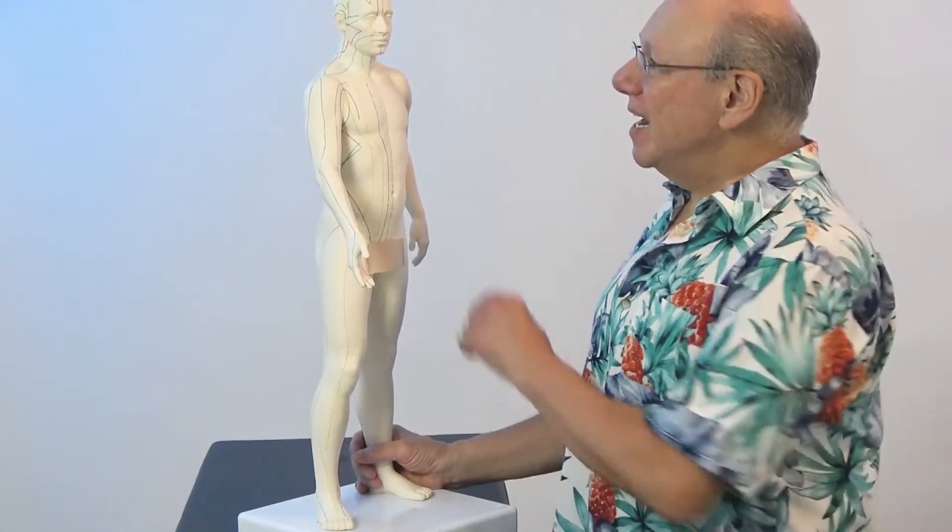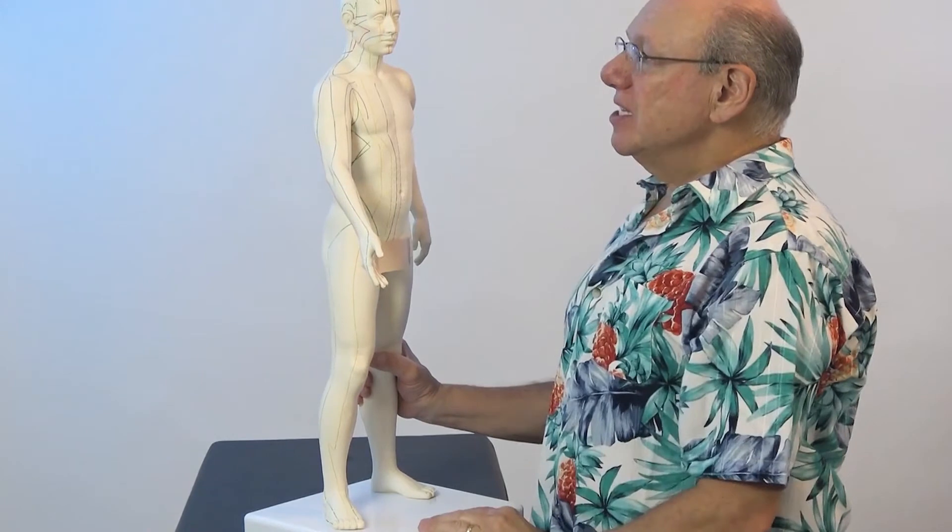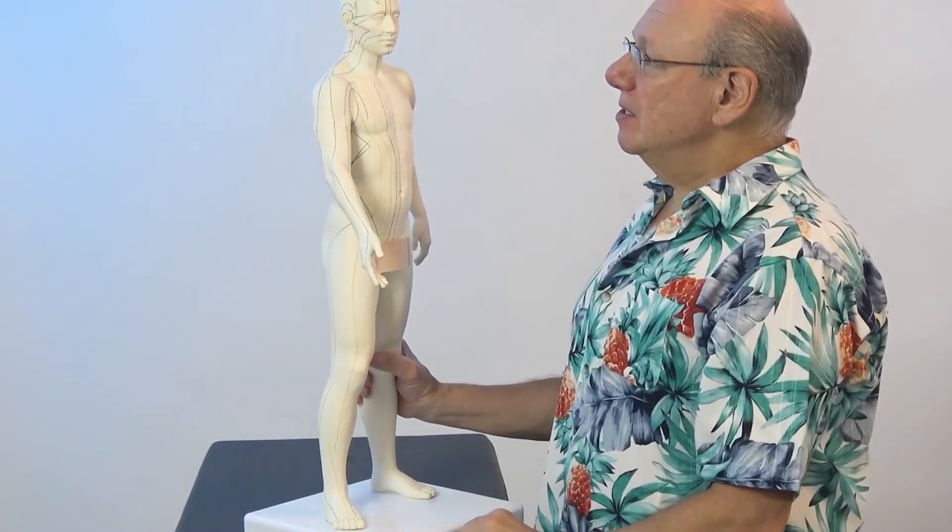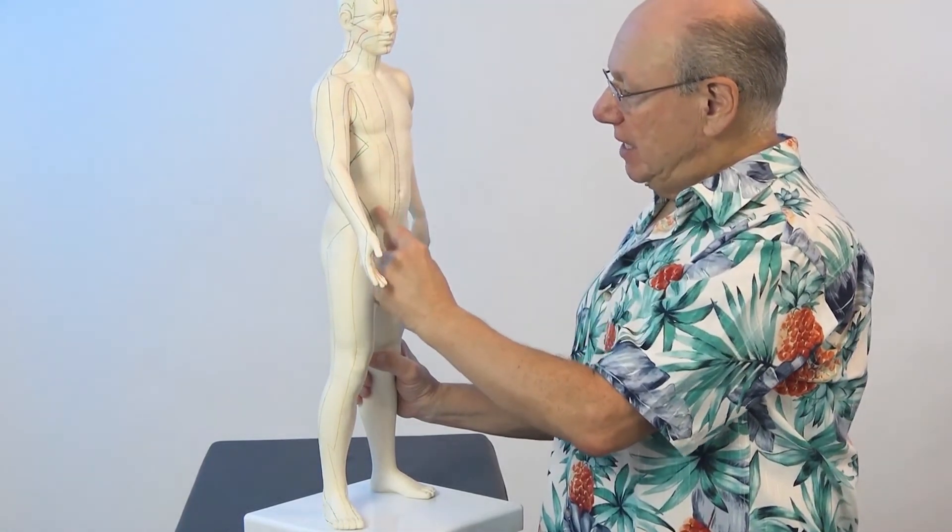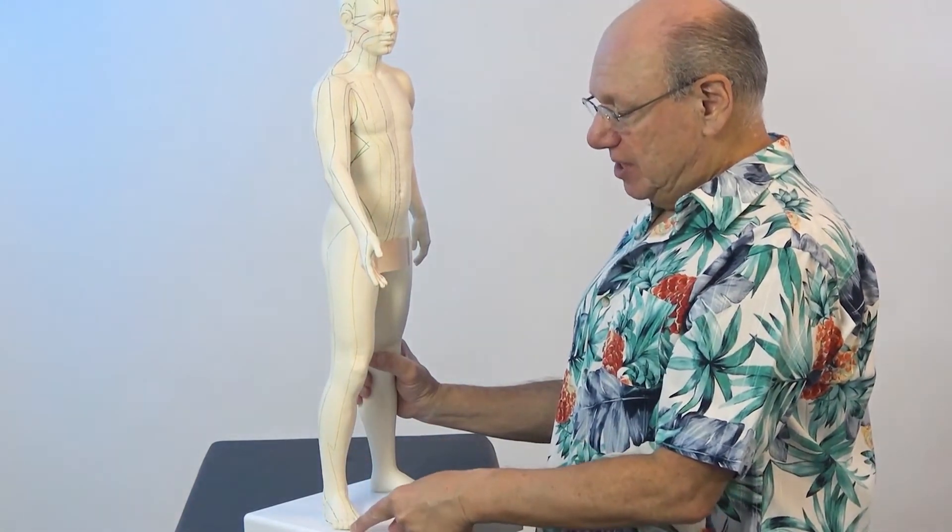Stomach 36 is on the Stomach Meridian. The Stomach Meridian starts just below your eye. It goes down to the jaw, then splits into two branches. One branch goes up to the side of your forehead. The other branch goes down the side of your body, on the outside of your leg, all the way down until it reaches the tip.